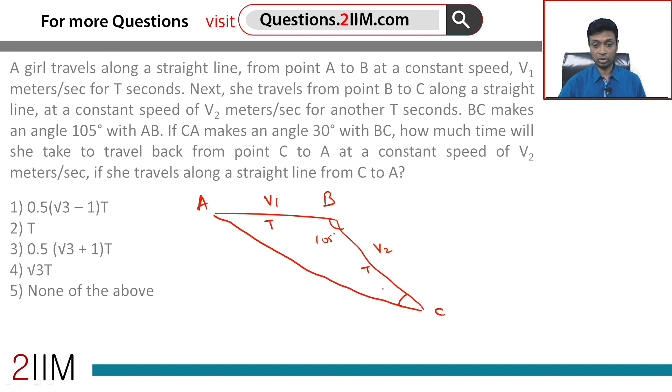So this is 30 degrees. 105 plus 30 is 135. So this one should be 45 degrees.